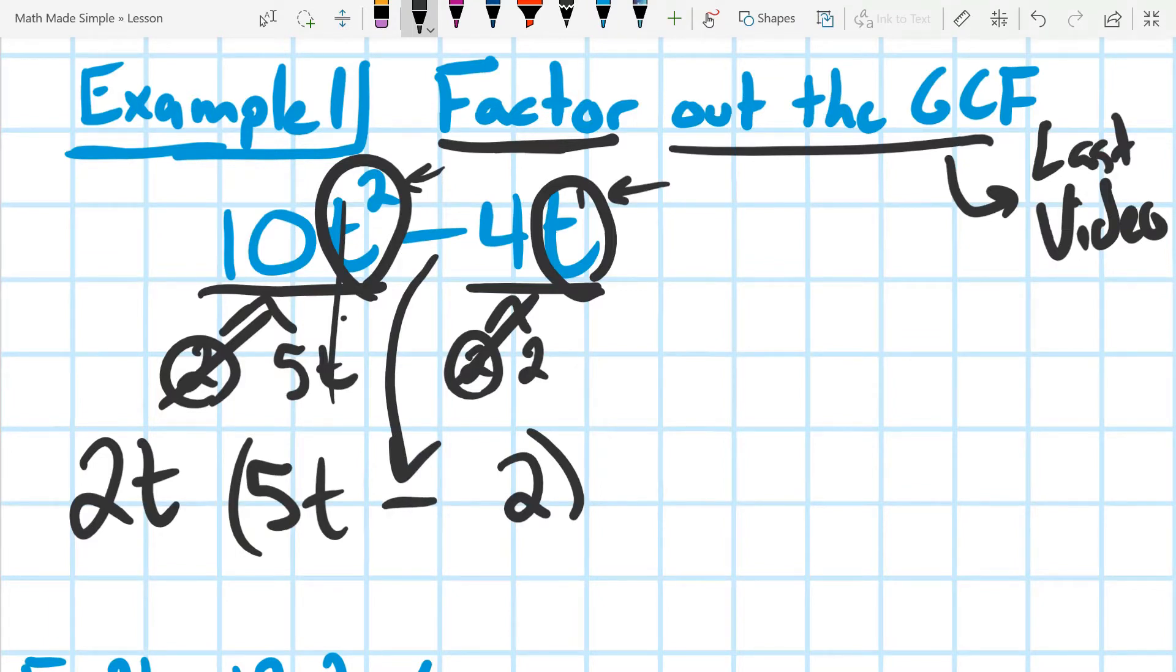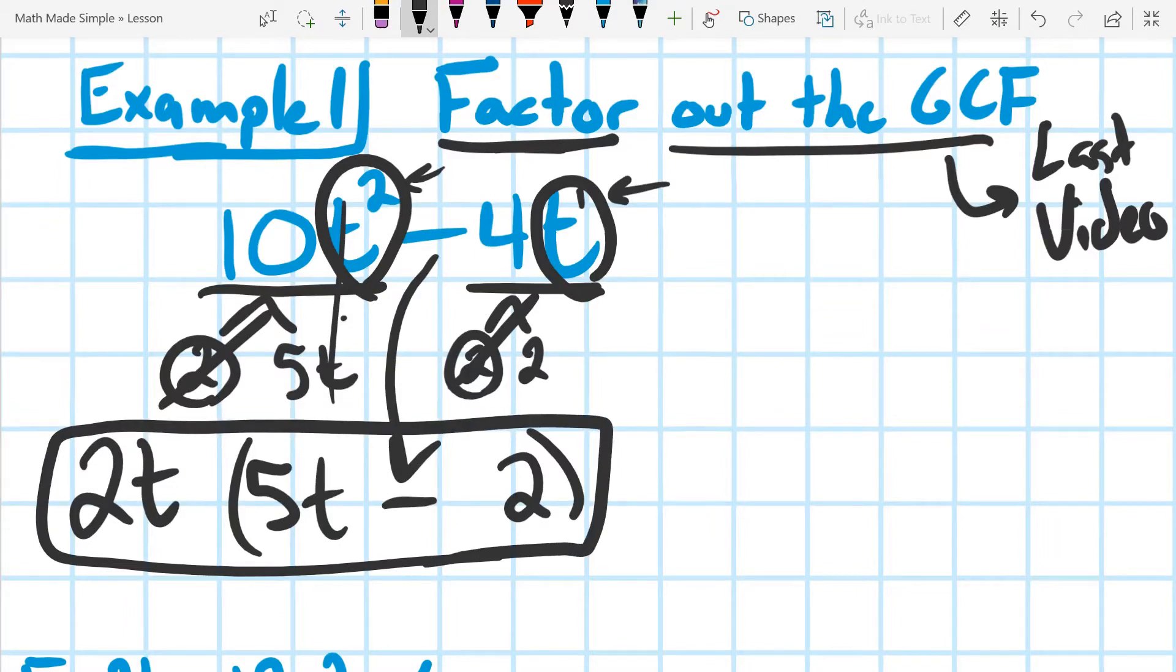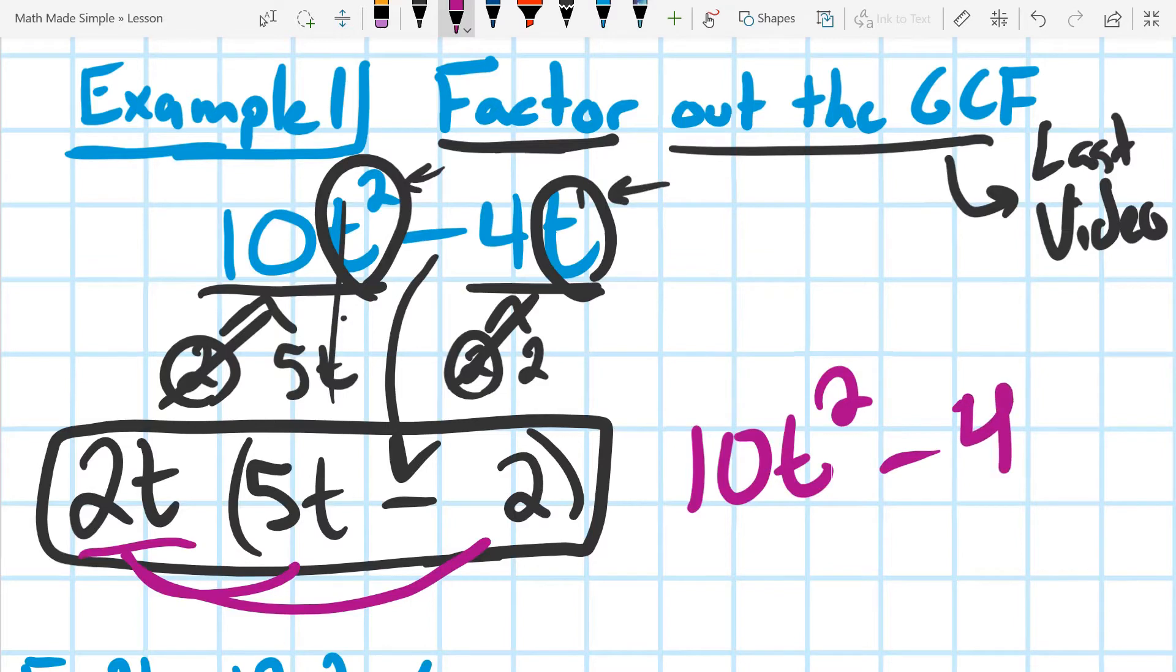And so to factor out the GCF, what we're going to end up with is 2t on the outside of the parentheses. Now, when you think about factoring, you should probably think about it like the opposite of the distributive property. So if we were to distribute this out and multiply into each term of this binomial, we'd end up with 10t squared minus 4t, which is exactly what we started with. So you can think of the distributive property being the inverse property of factoring.